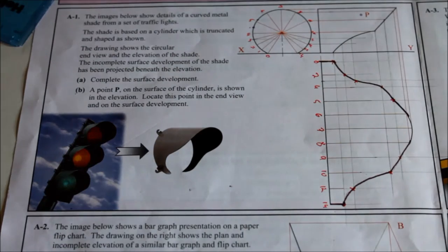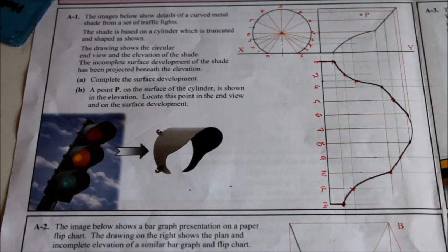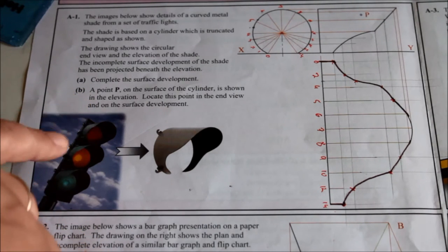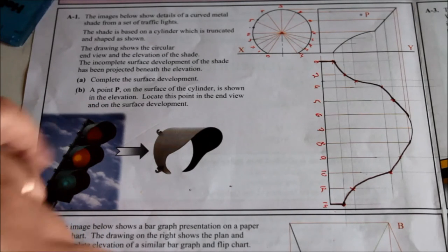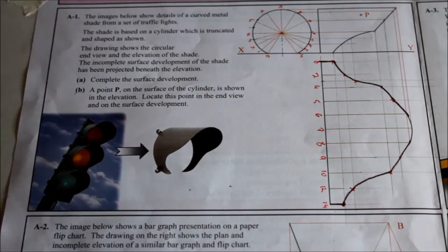That's your surface development of the shape. So part A is complete. Now part B: Point P on the surface of the cylinder is shown in the elevation. Locate the point in the end view and on the surface.